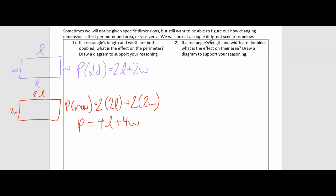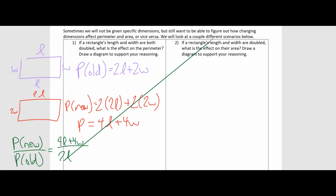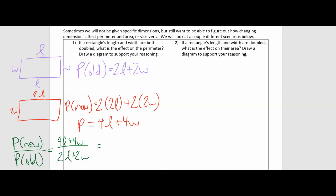To verify, we set up the ratio: perimeter of the new over perimeter of the old gives us 4L plus 4W over 2L plus 2W. We can factor out 4 from the numerator to get L plus W, and factor out 2 from the denominator to also get L plus W. The L plus W terms simplify, and 4 divided by 2 is 2. So the factor by which the perimeter is increasing is 2.